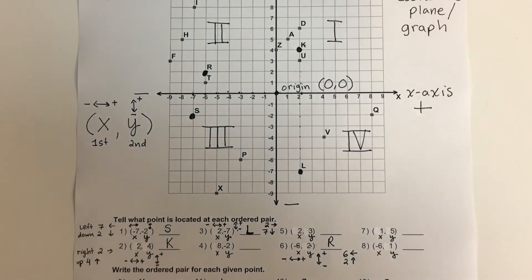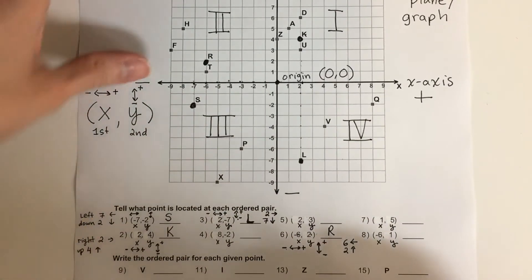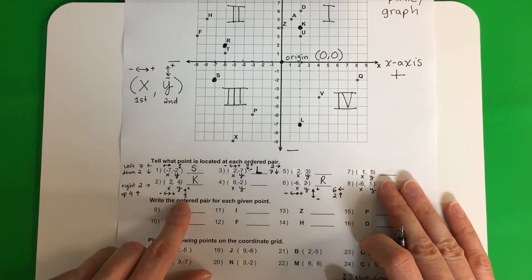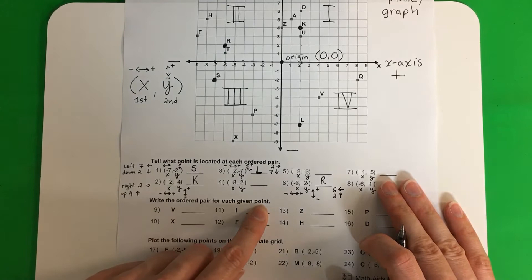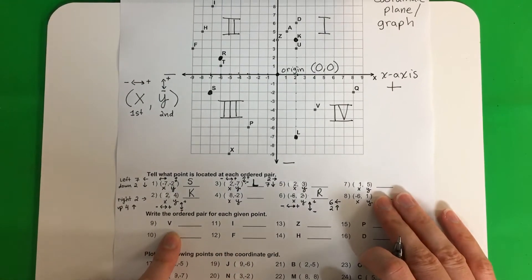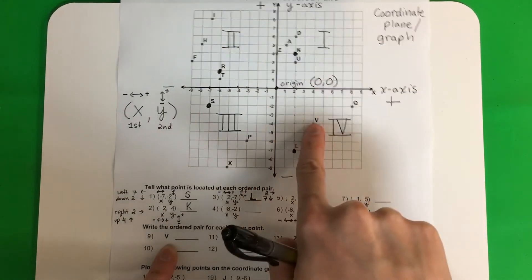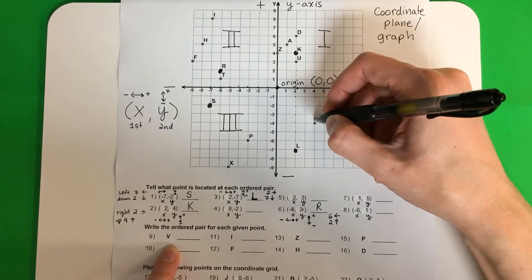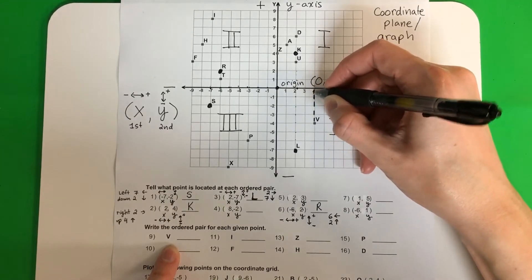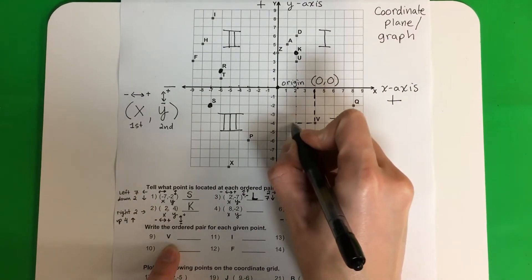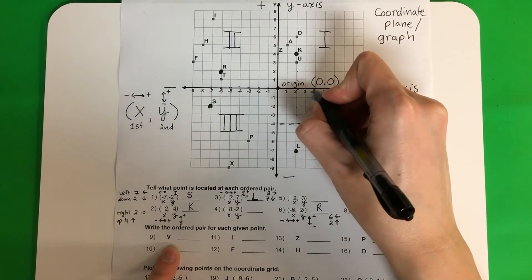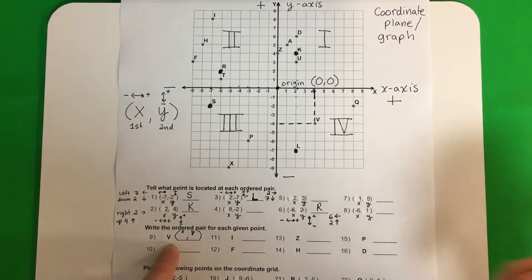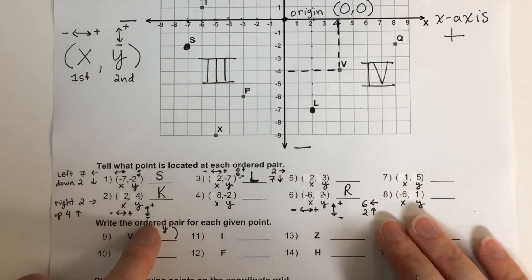You can finish the rest of this section yourself. Let's go on to section two with some different instructions: write the ordered pair for each given point. Remember, always put it in parentheses — first is x, second is y.